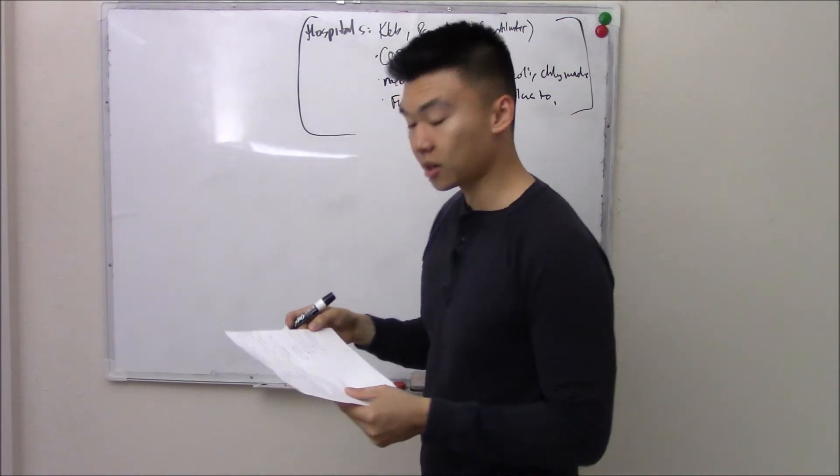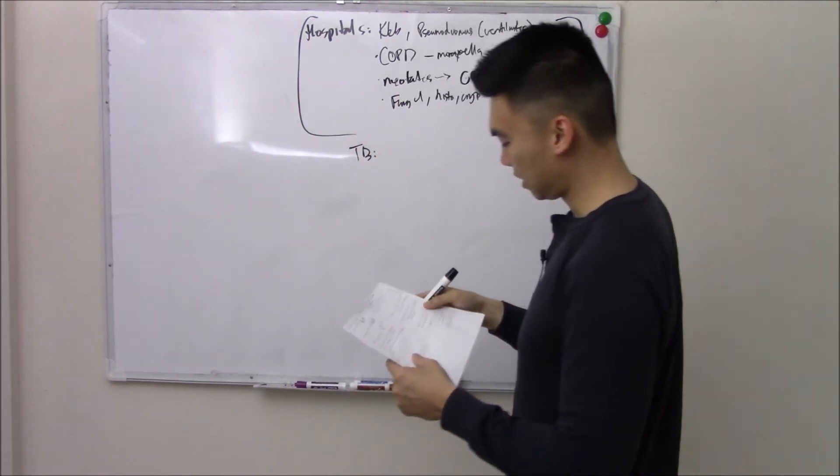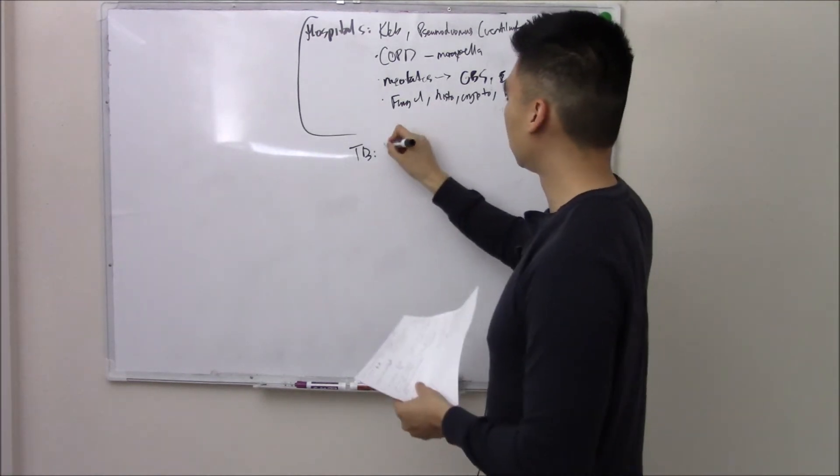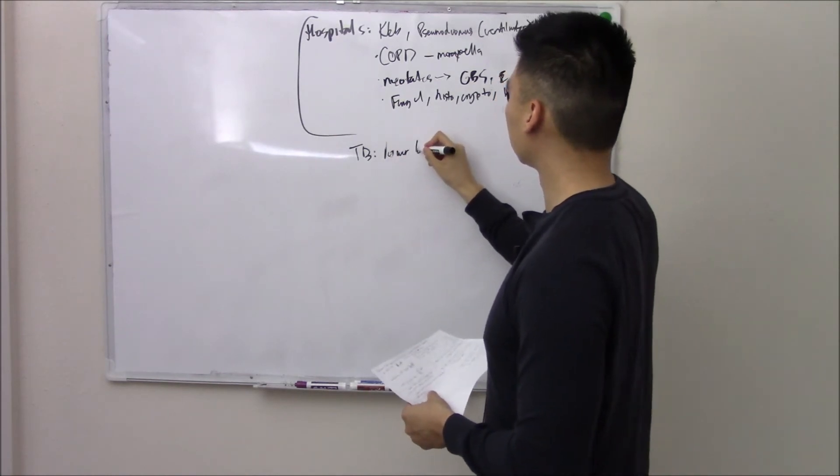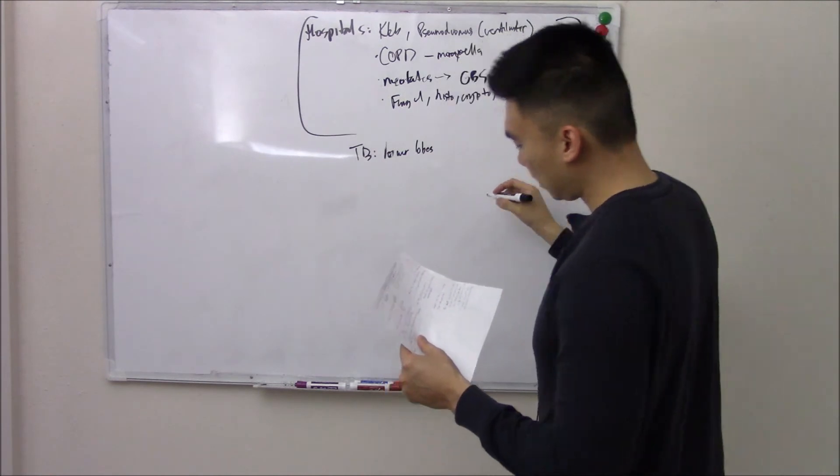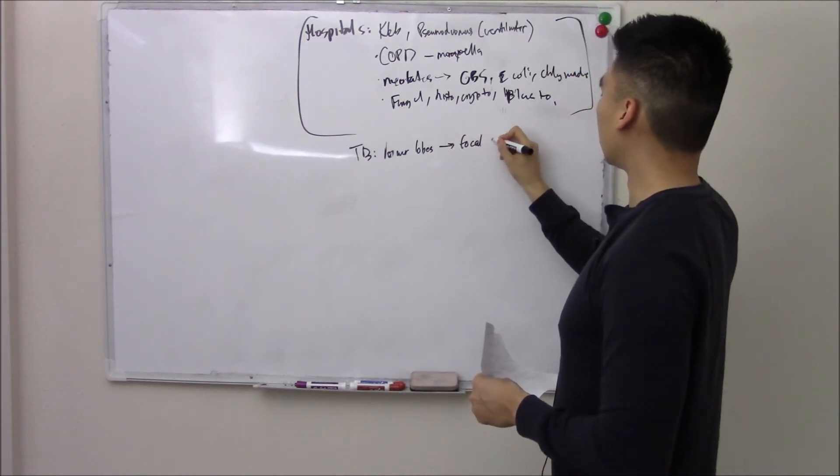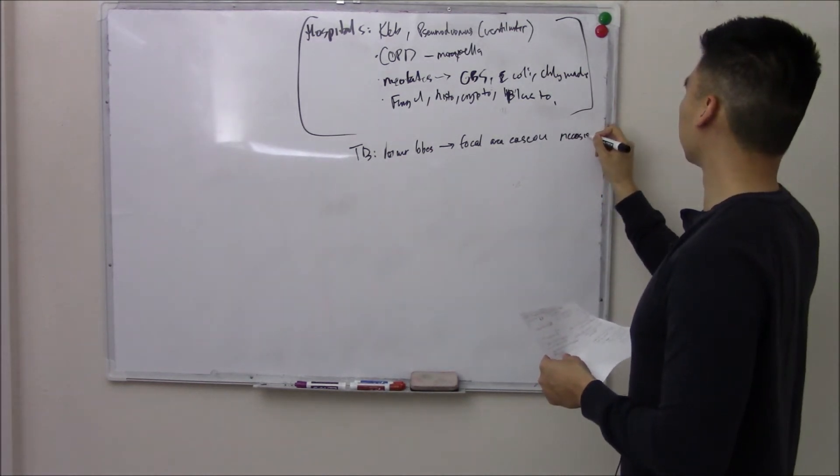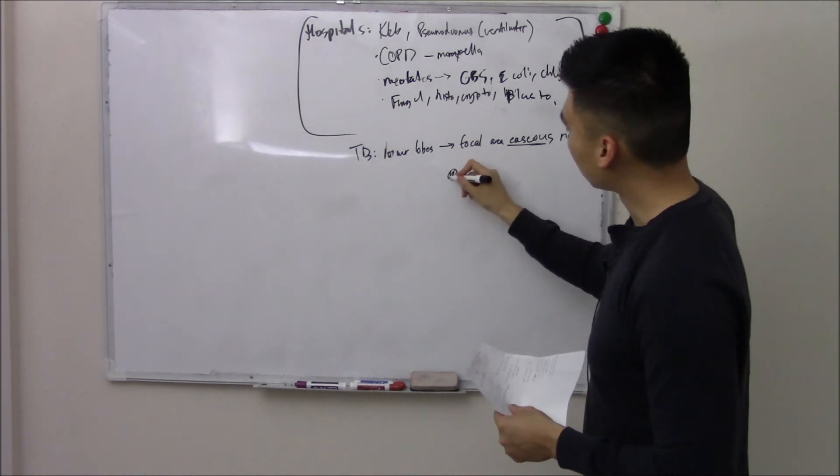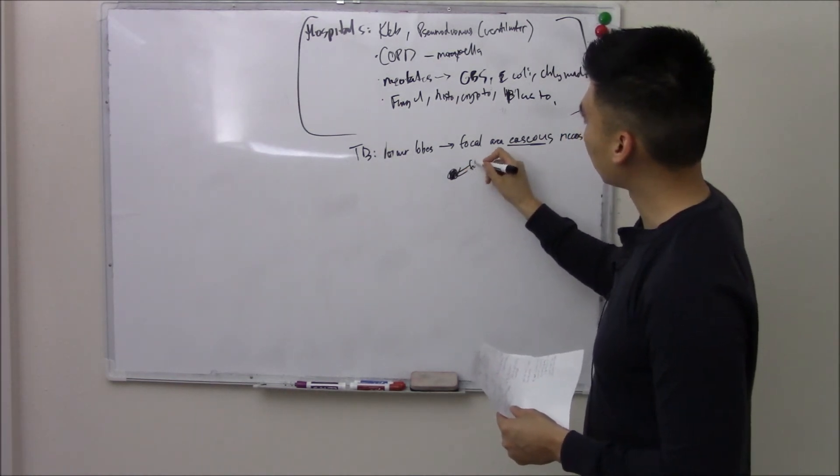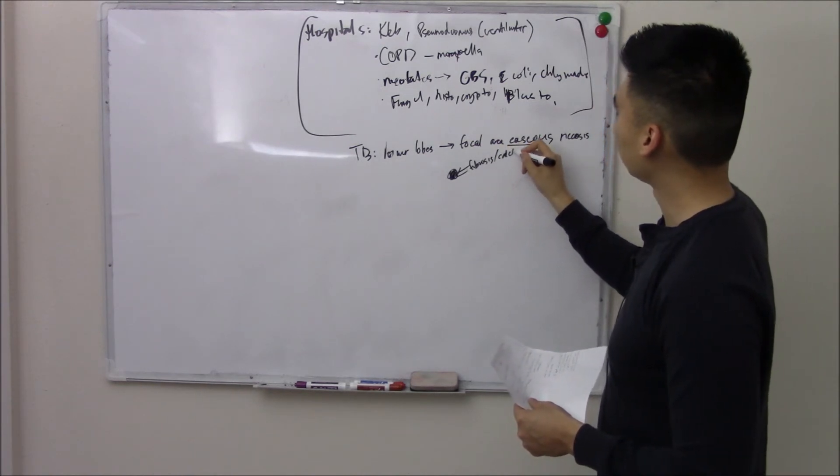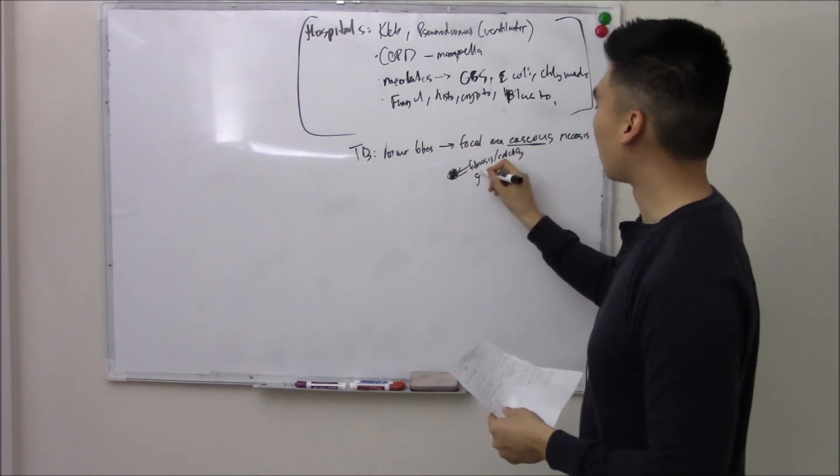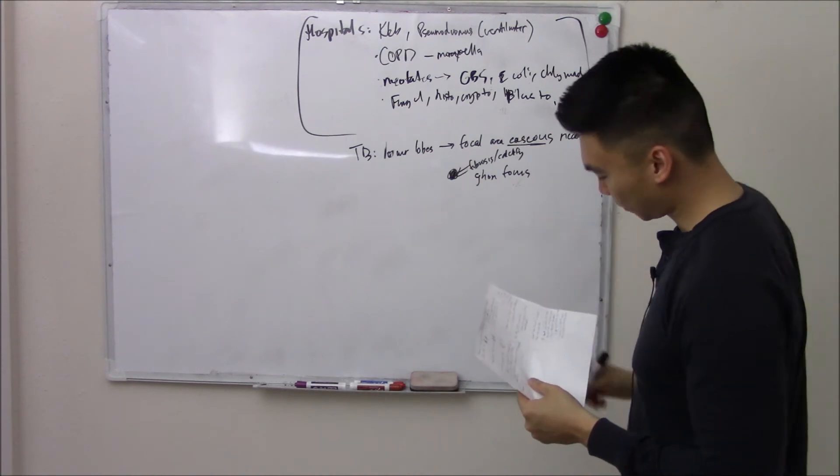So these are your bugs of pneumonia. Let's talk about another lung infection. Let's talk about TB, tuberculosis. Now, tuberculosis, you get that initial infection. It usually affects your lower lobes. And you get this focal area of caseous necrosis. So TB causes caseous necrosis. So you get this focal area of caseous necrosis. And that can undergo fibrosis and calcify. Great picture will be a little calcium nugget. We call this a Ghon focus.